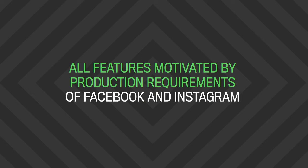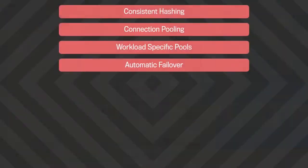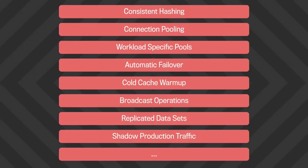Now I'm going to give you a brief overview of some of MacRouter's features. The important thing to note is that all of these features are motivated by actual production requirements of Facebook and Instagram, so as a result they are robust and of production quality. MacRouter has features like consistent hashing, connection pooling, workload-specific pools, automatic failover, and many more. We have a detailed introduction on our GitHub Wiki, so I encourage you to take a look.